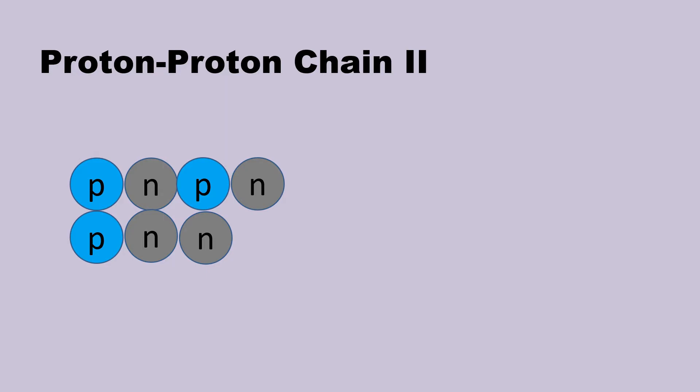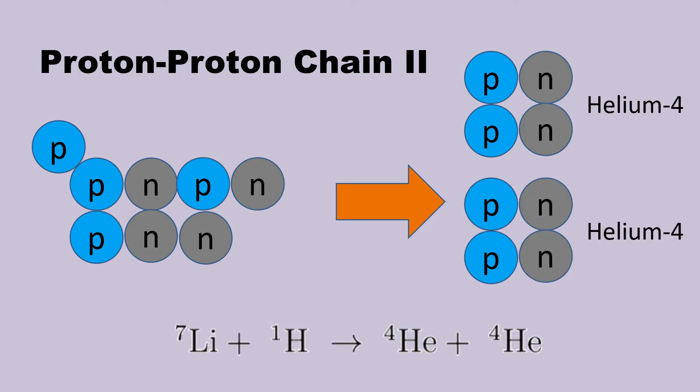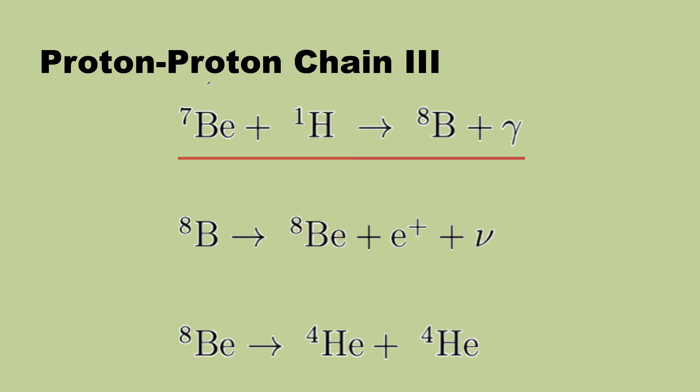Finally, lithium-7 and a proton fuse to produce two helium-4 isotopes. The last type of proton-proton chain will infuse beryllium-7 and a proton, which will end in producing two helium isotopes.